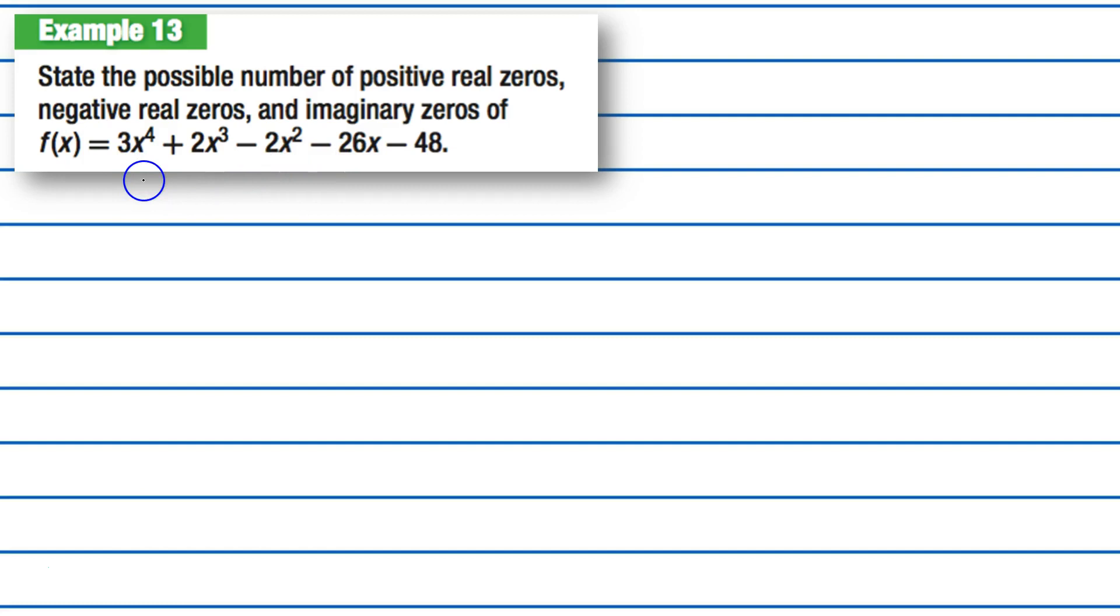So first of all, in order to find the number of positive real zeros, we're just going to simply find out if the sign changes. So, when we have a positive to a positive, there are zero changes in sign. A positive to a negative, there's 1. A negative to a negative, zero changes. A negative to a negative, also zero changes. So positive real zeros, we have just 1.